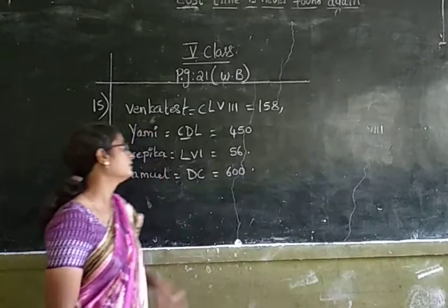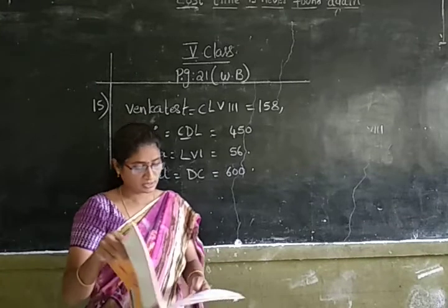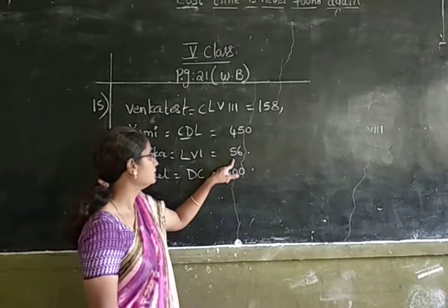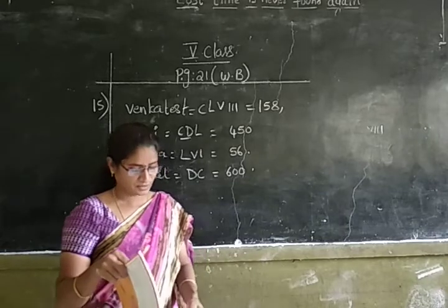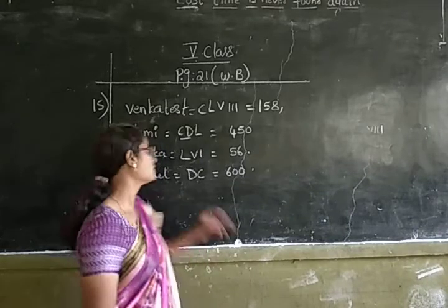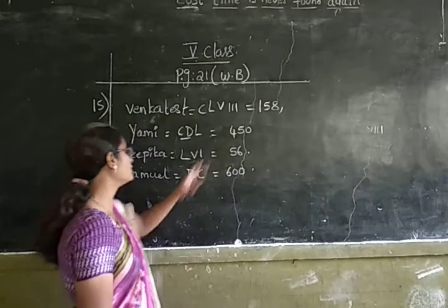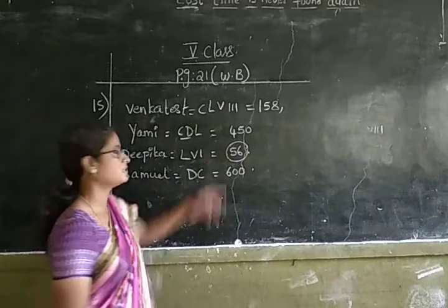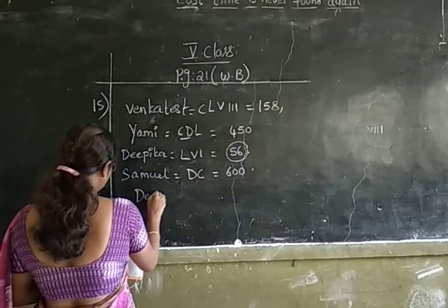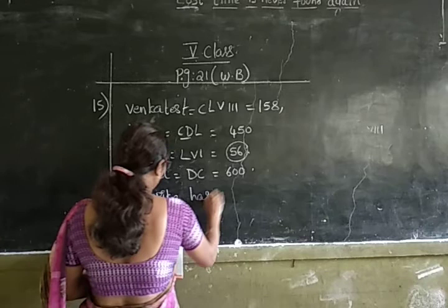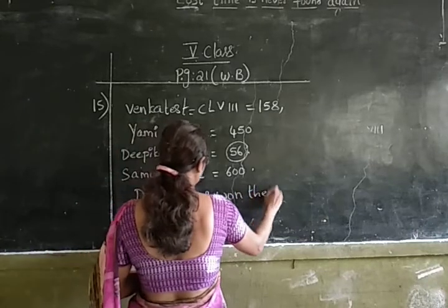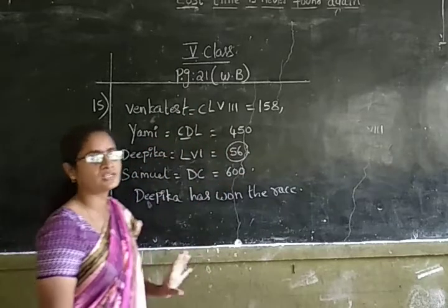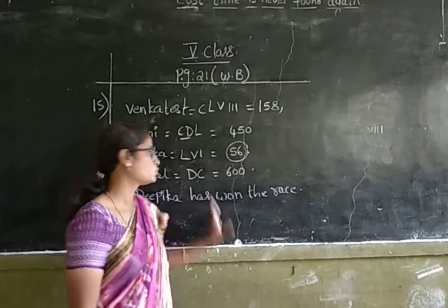So, Venkatesh's number is 158, Yami's number is 450, Deepika's number is 56, and Samuel's number is 600. The person wearing the jersey with the smallest number is Deepika. So Deepika completed the race in the least time. Deepika is the winner because she is wearing the jersey with the least number.